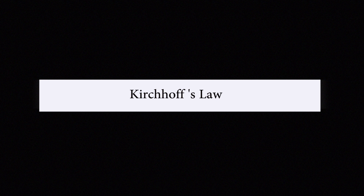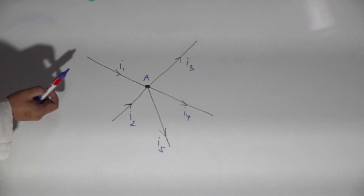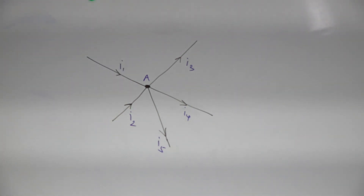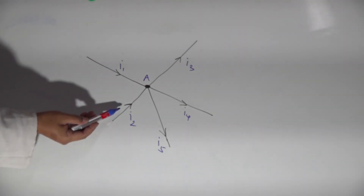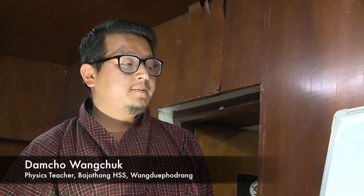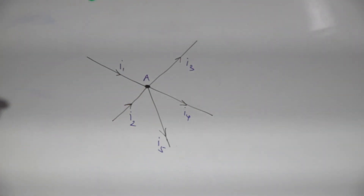In 1824, Kirchhoff suggested two laws to determine the current flowing through a conductor in a complicated circuit. First, let us look at Kirchhoff's first law, also known as the junction rule. In an electric circuit, the algebraic sum of the currents meeting at any junction is zero. Here we see five conductors carrying five different currents — I1, I2, I3, I4, and I5 — meeting at junction A. Currents I1 and I2 enter the junction, whereas I3, I4, and I5 leave the junction. According to the sign convention, current entering the junction is taken as positive and current leaving the junction is taken as negative.